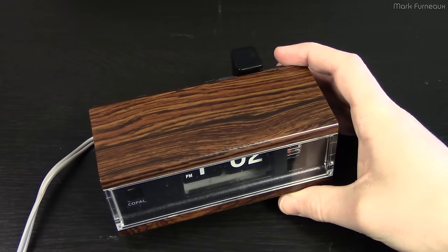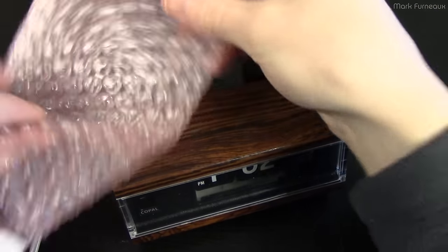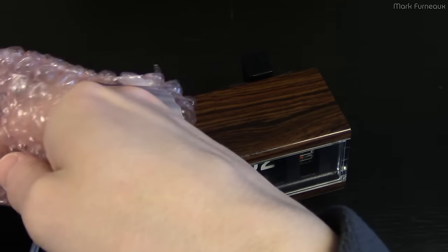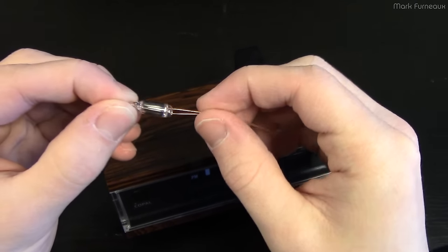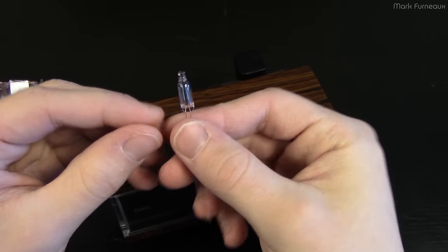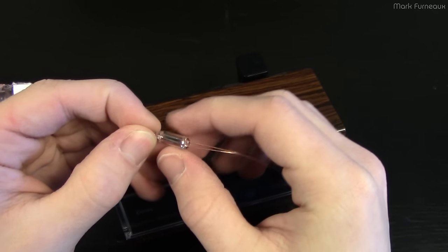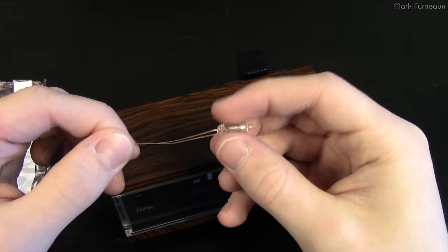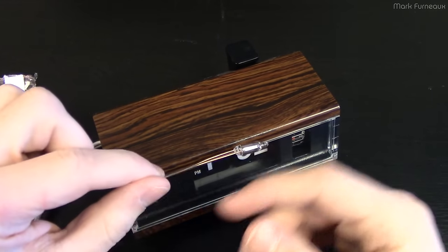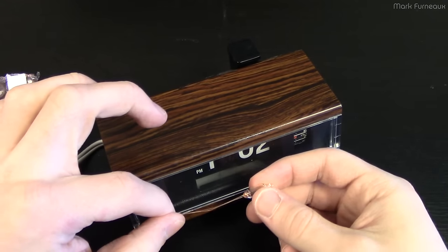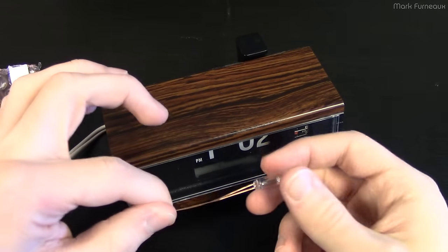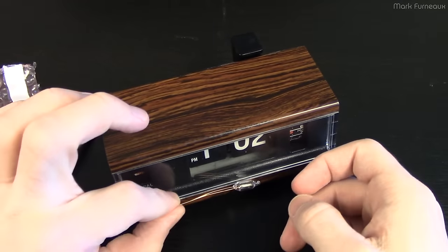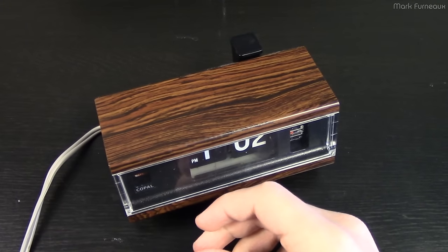So I've ordered two, some 95 volt neon tubes, and I'm just going to be replacing the neon in this and also replacing the resistor just as a matter of course because the resistors sometimes get quite hot in these. I'll replace it with a metal film one and that just sits under there.